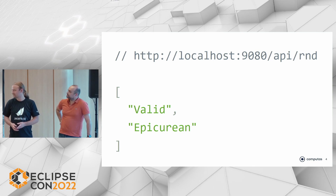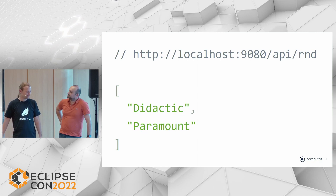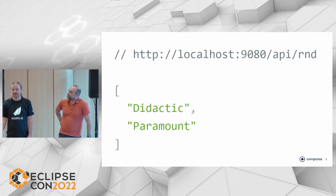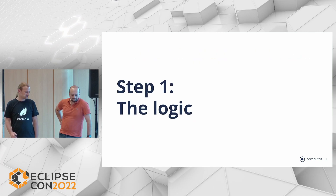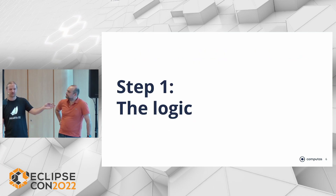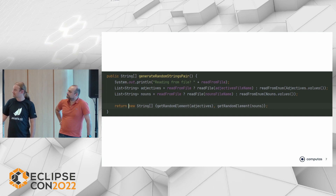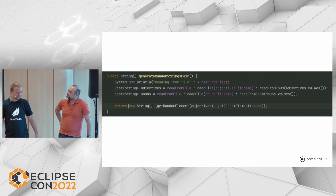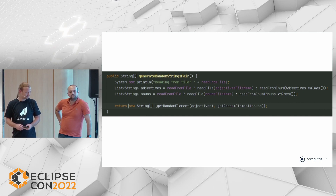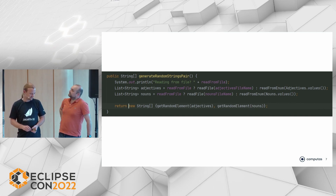So when you call it once you get, for instance, 'valid Epicurean'. If you call again, you get something completely different. The business logic — step one on this road from nothing to production — is pretty much all of it, including some logging. We're only missing two enums for the word lists, and that's basically all there is.